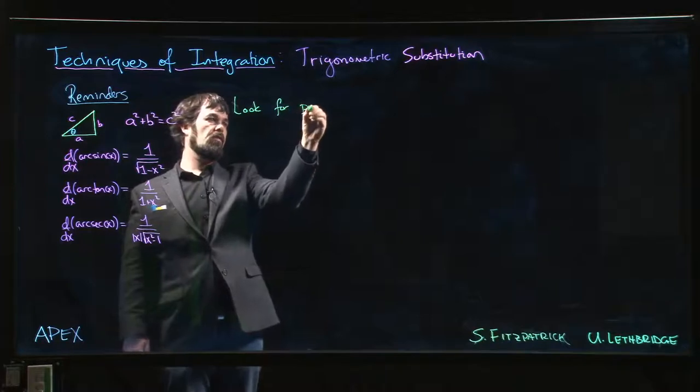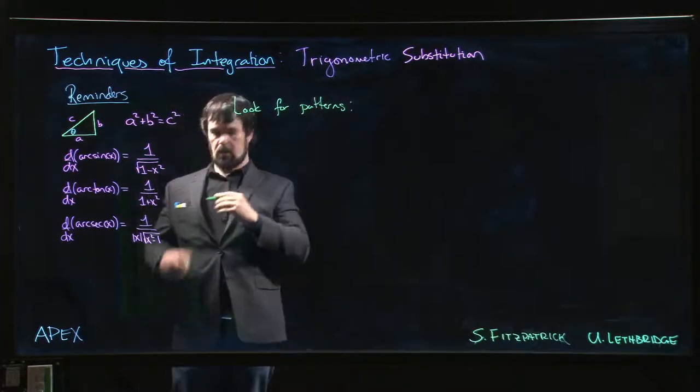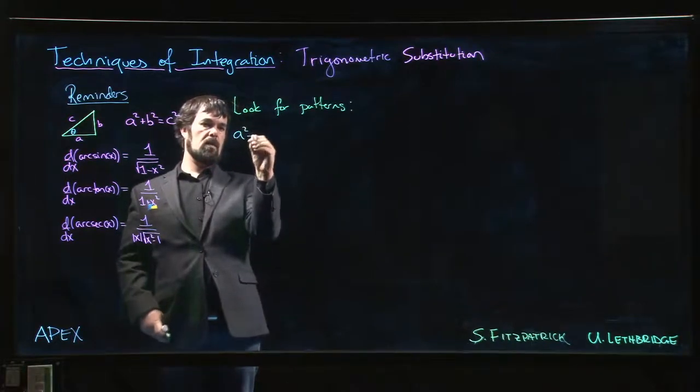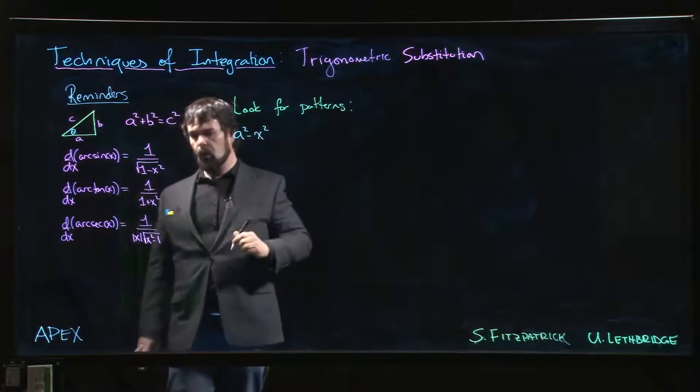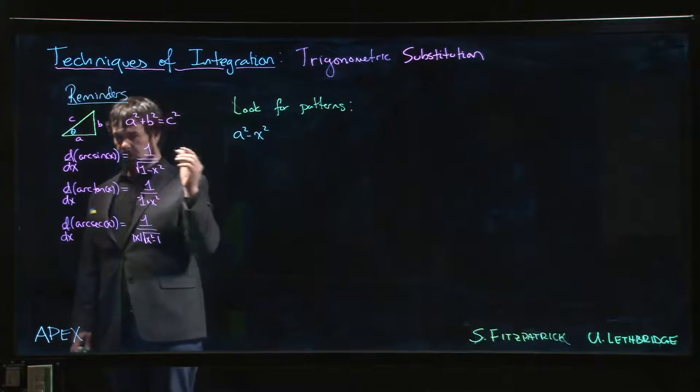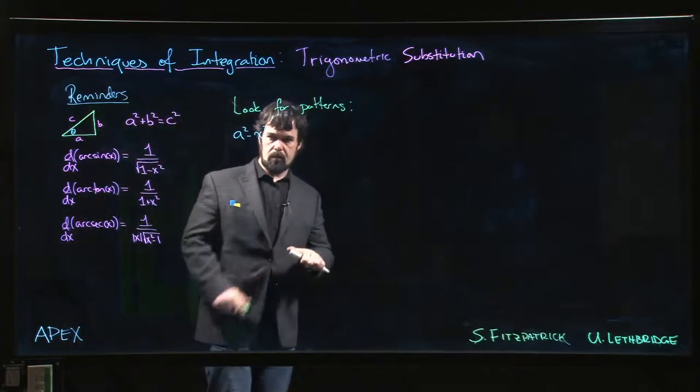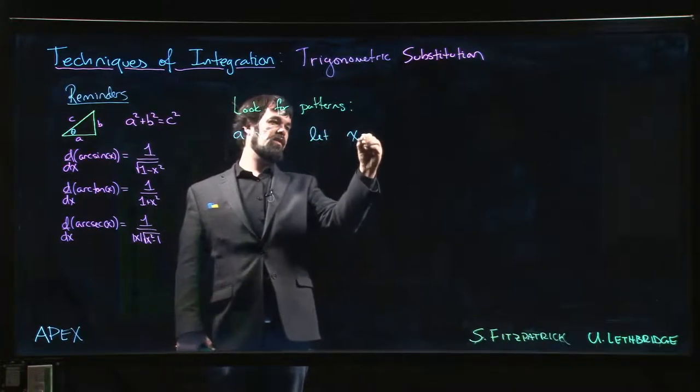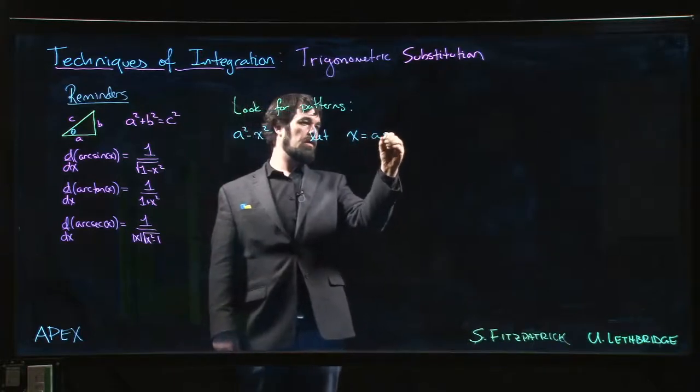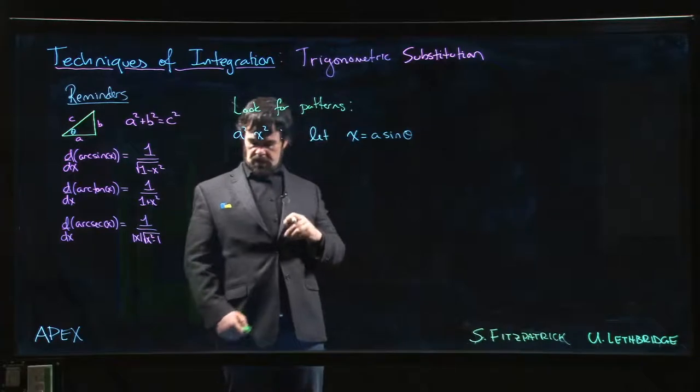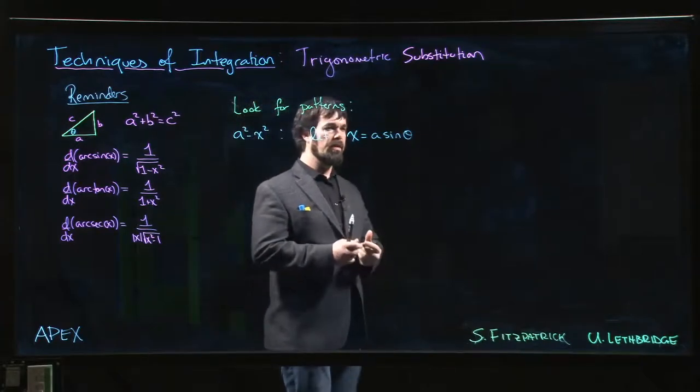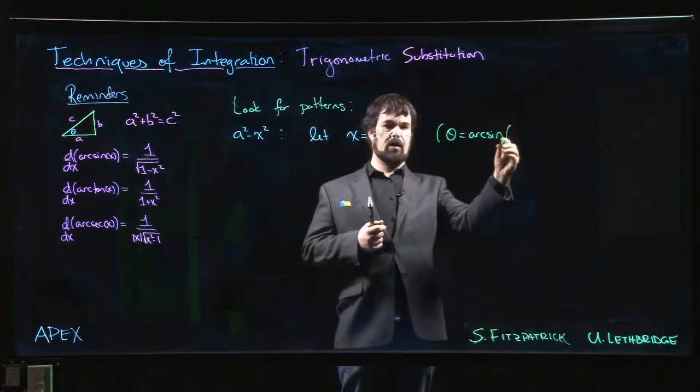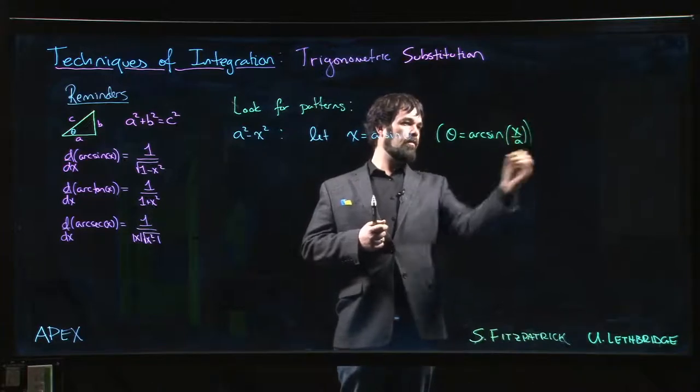We're going to look for the following patterns. If you see a squared minus x squared, reminiscent of arc sine except there might not be a 1, it might be something else, what we do is we let x equal a sine theta. And when we say x equals a sine theta, what we really mean here is that theta is arc sine of x over a.